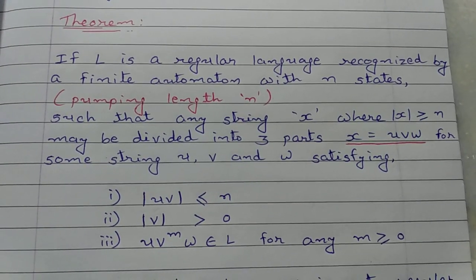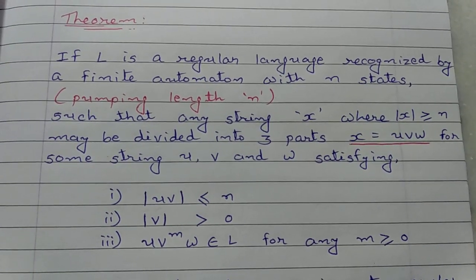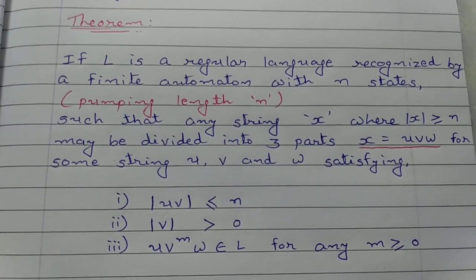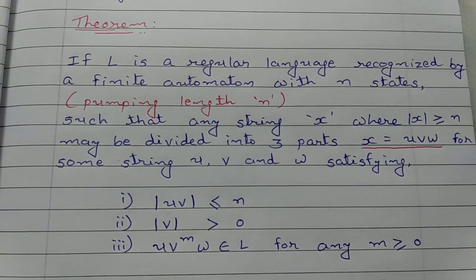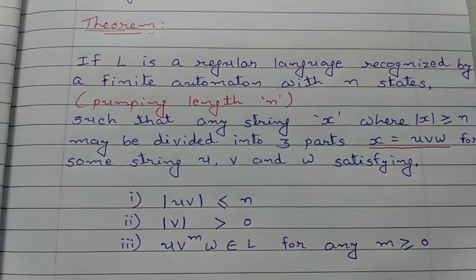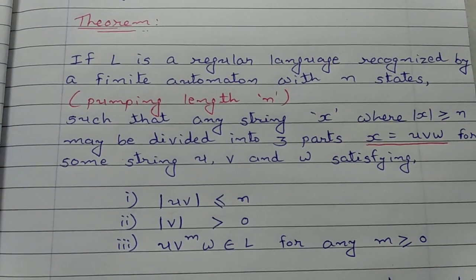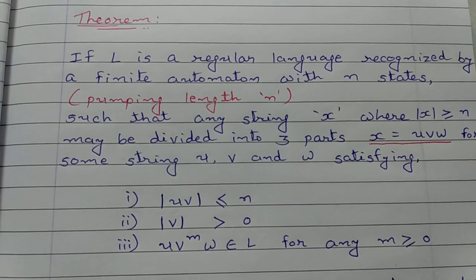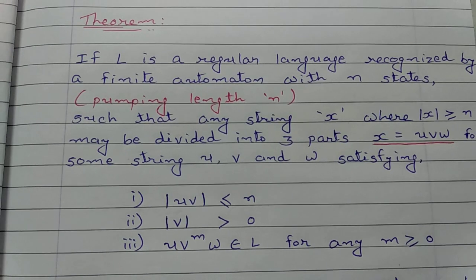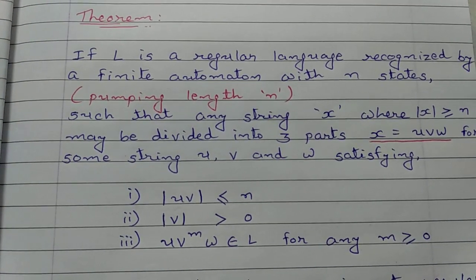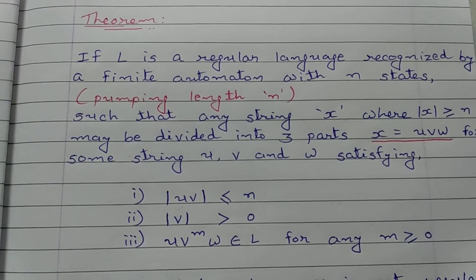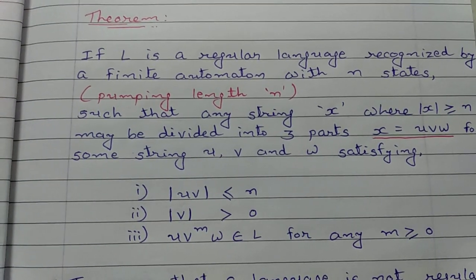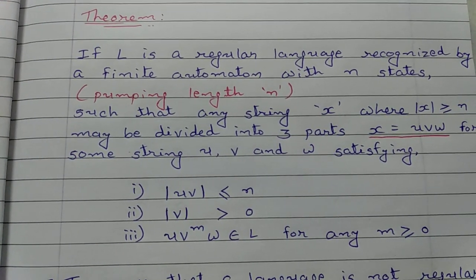First, the length of u and v is less than or equal to pumping length n. Second, mod of v is greater than 0. Third, u, v power m, w belongs to language L for any m greater than or equal to 0. This result is often referred to as the pumping lemma for regular languages, a lemma that describes an essential property of all regular languages.